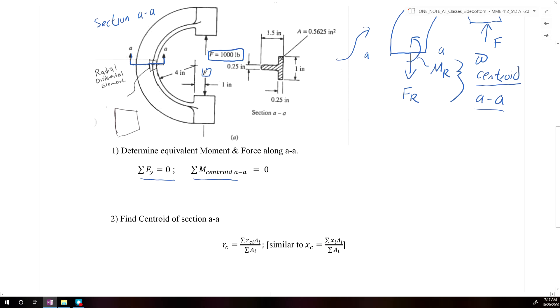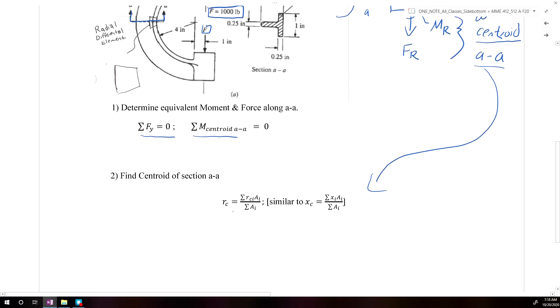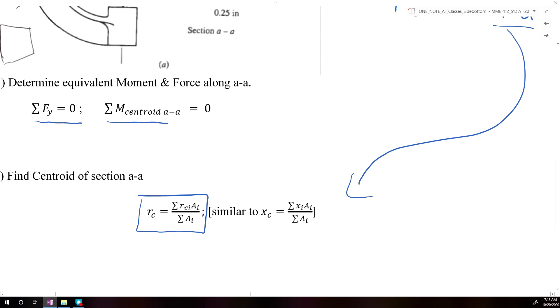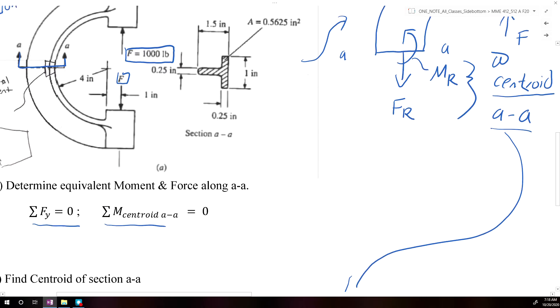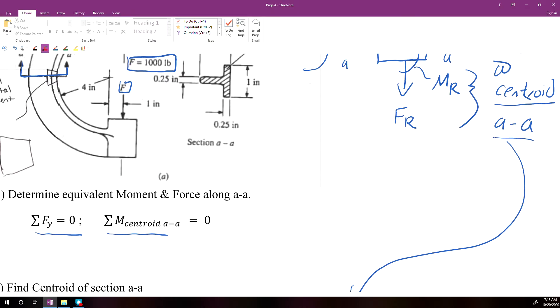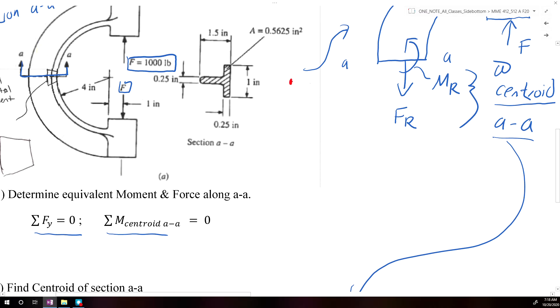But we do need to know where the centroid of the section a-a is. So to determine the centroid, we need to use the centroid formula. So the centroid formula for a composite section is going to be equal to the sum of all the centroids of the areas times the individual area divided by the sum of all the total areas.